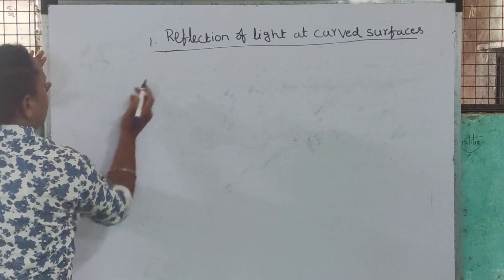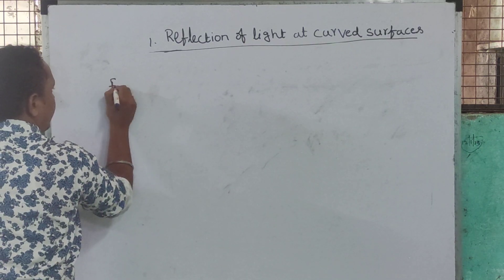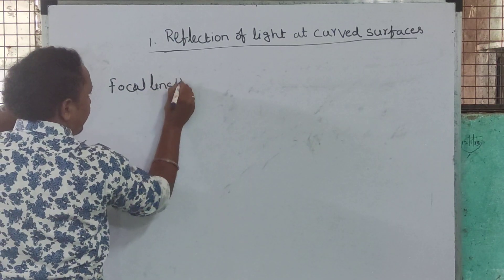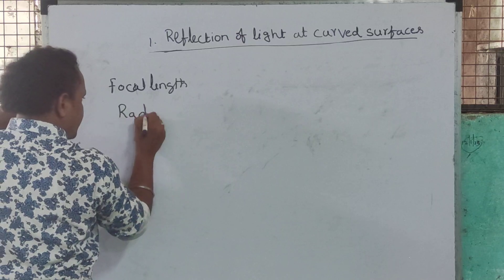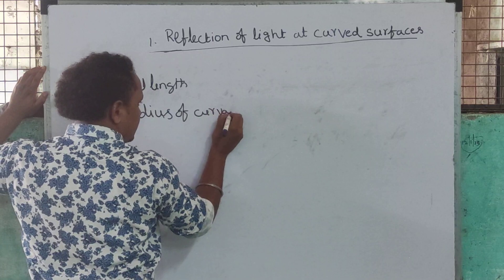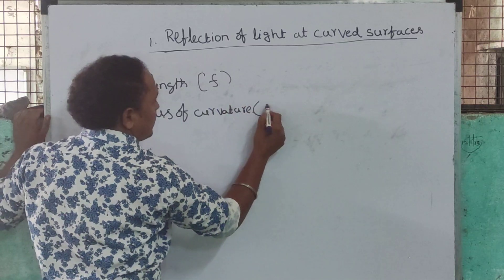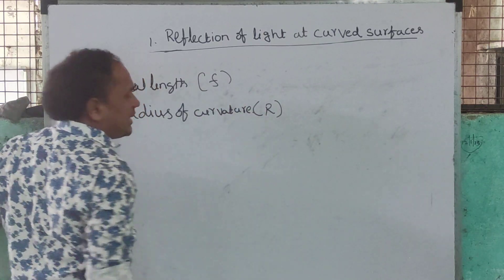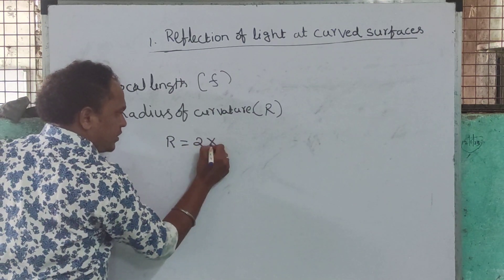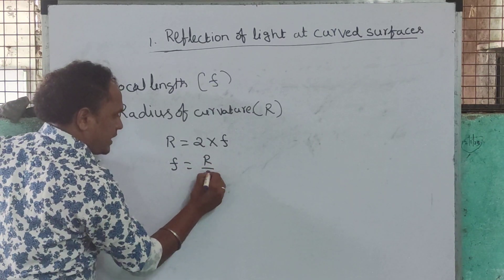First of all I have to explain the relation between focal length and radius of curvature. The focal length symbol is small f and the radius of curvature is capital R. The formula is: R is equal to 2 into F, and F is equal to R by 2.